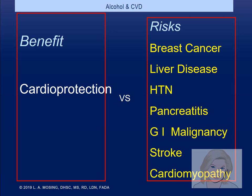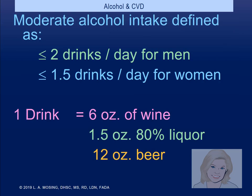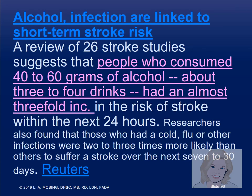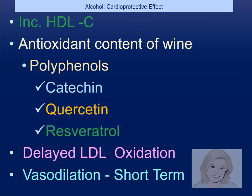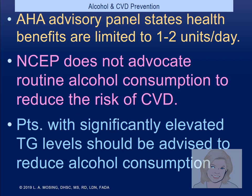Some people think alcohol is cardioprotective, but throughout this course we've found higher risks of breast cancer, liver disease, hypertension, pancreatitis, GI malignancy, stroke, and cardiomyopathy. Alcohol is never recommended. Wine is made from grapes, which do contain polyphenols, catechins, and quercetin — but the government and the National Cholesterol Education Program do not recommend alcohol. The American Heart Association says one to two units a day. Both organizations agree: if a patient has elevated triglycerides, they should not be drinking alcohol, as alcohol — like sweets — raises triglycerides.